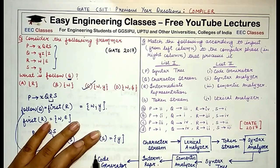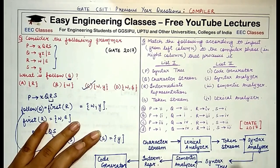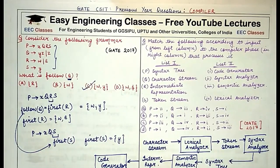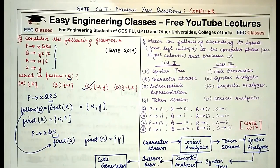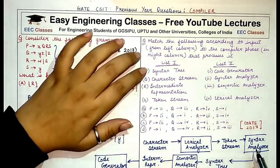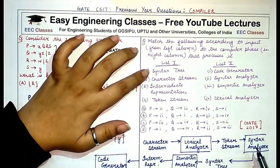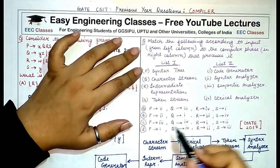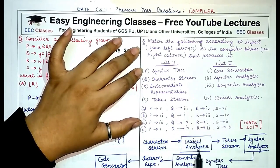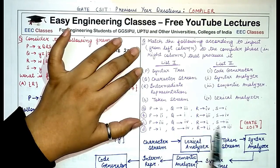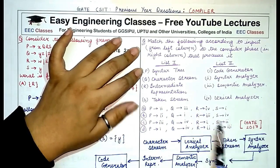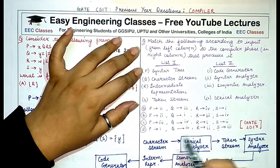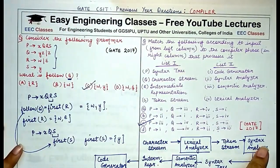The semantic analyzer generates intermediate representation, which is then used by the code generator. Matching these options: syntax tree is input to the semantic analyzer (P→3), character stream is input to the lexical analyzer (Q→4), intermediate representation goes to the code generator (R→1), and token stream goes to the syntax analyzer (S→2). So C is the correct answer.